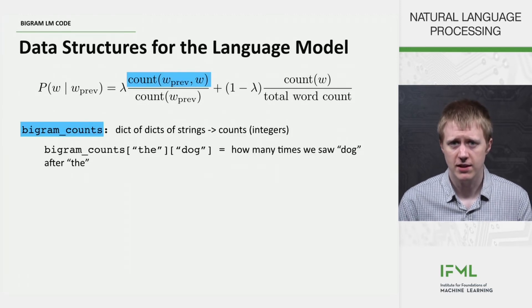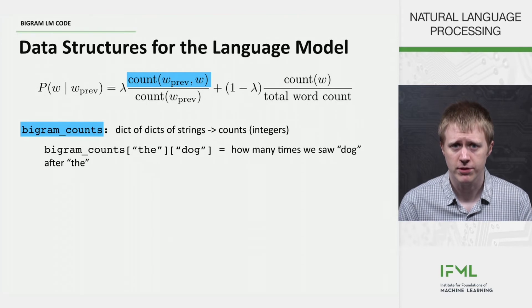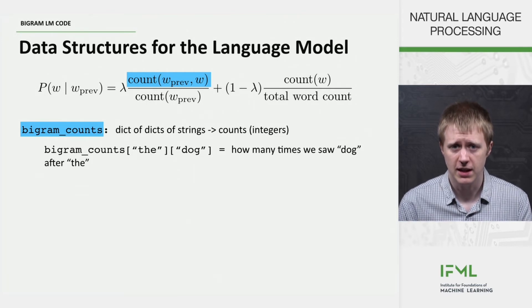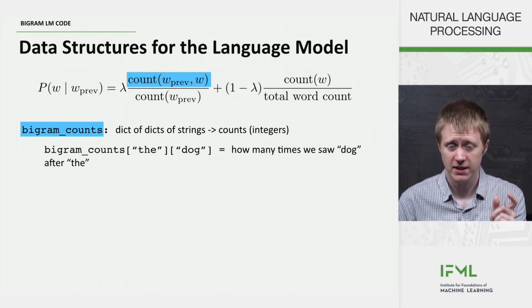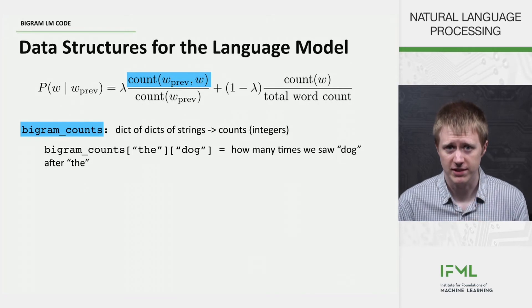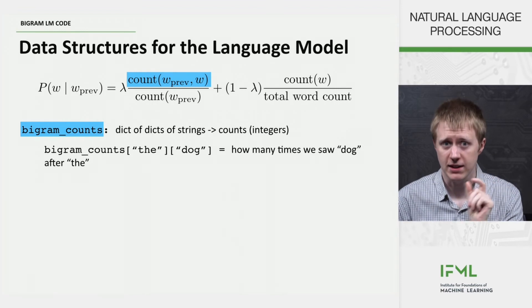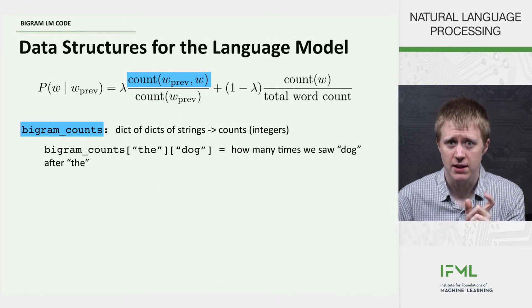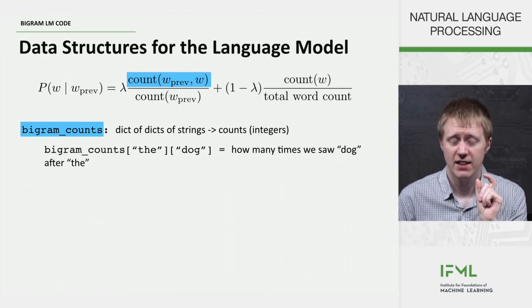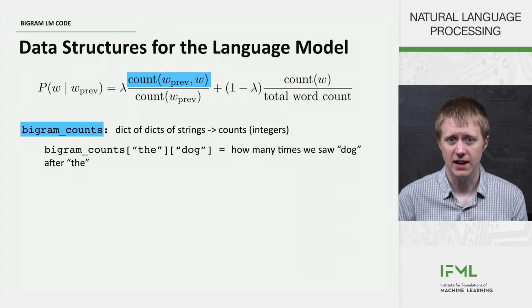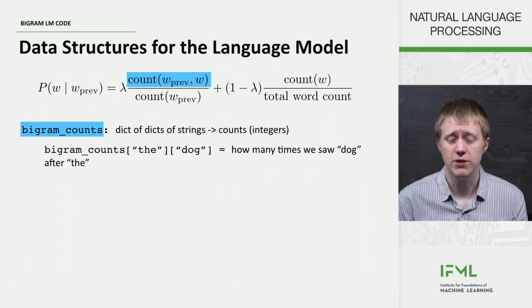So this first piece is what we call bigram counts. So this is the most complicated data structure here. We have a dict of dicts of strings to counts. So what we do is we map strings to dicts. So bigram_counts of the is a dict. And then that dict, when you index into it with dog, gives you an integer.